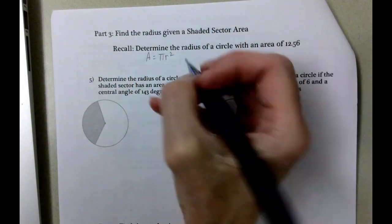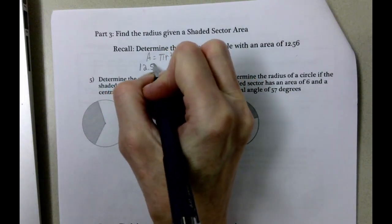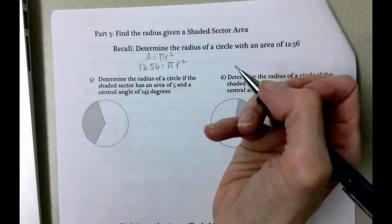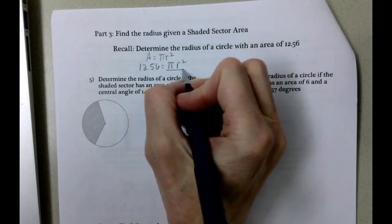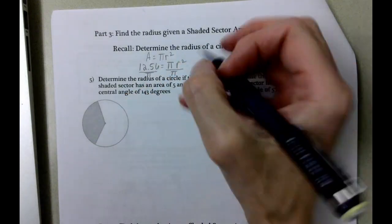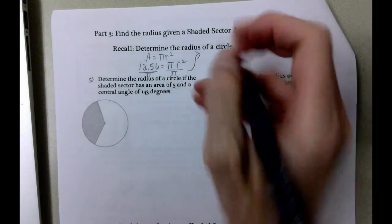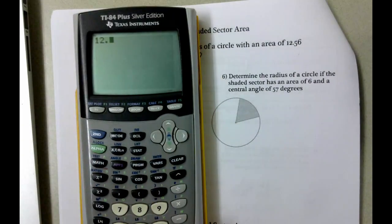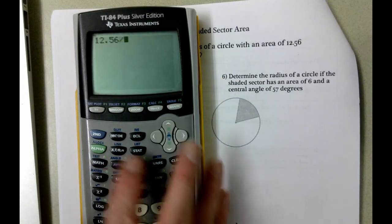But what we know is that the area is 12.56 and we want to find the radius. So we'll start by dividing by pi. Use your pi button in Desmos. Use your pi button on your calculator. So we're going to take 12.56 and divide it by pi.